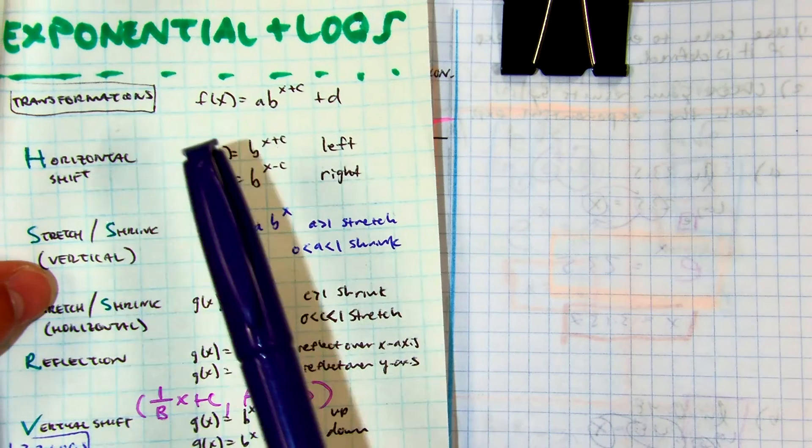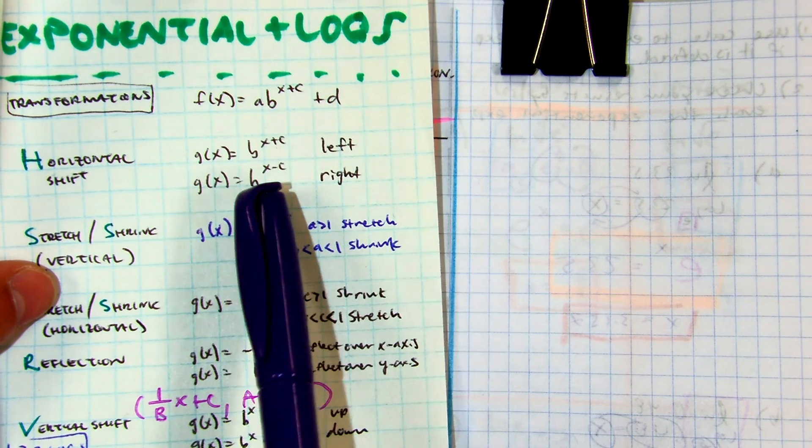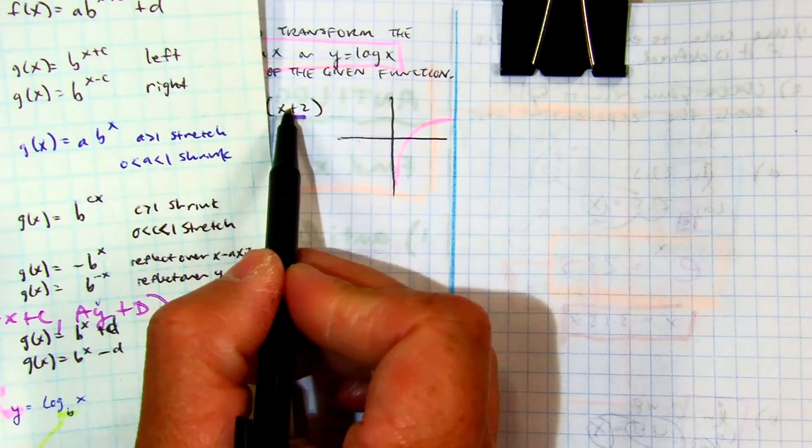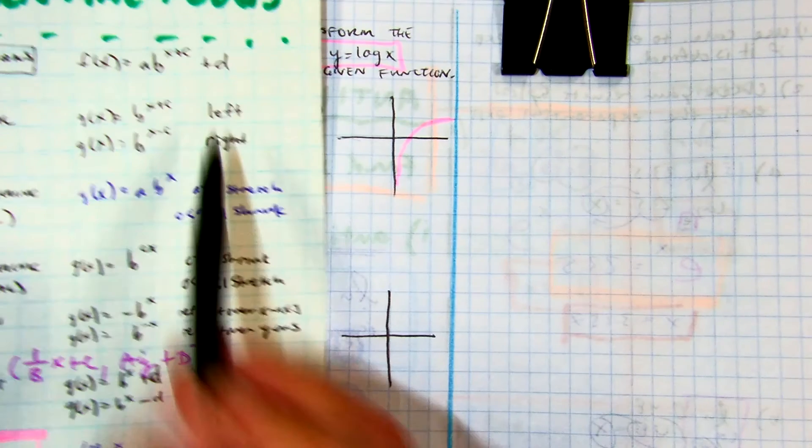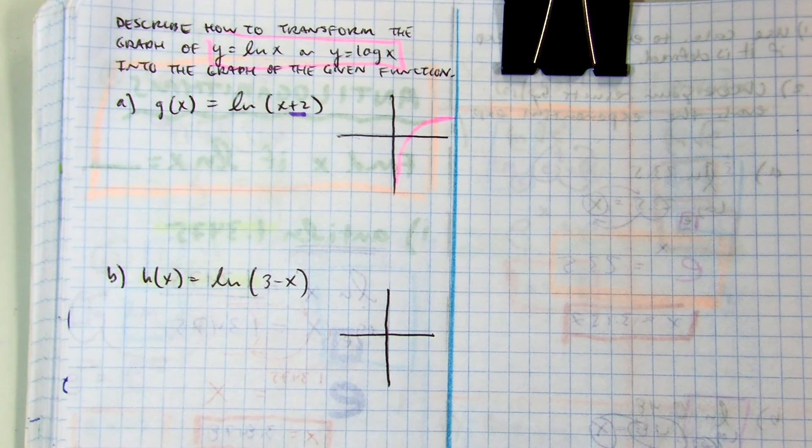So again, I'm even applying the transformations of exponentials to our logs and natural logs, so they're the same thing. Here you're doing plus 2. So if you're going plus, you're actually going where? Left. Let's go ahead and write that. Left 2.